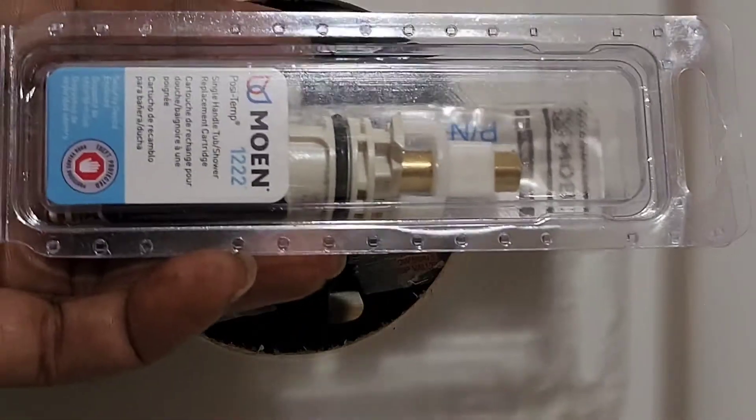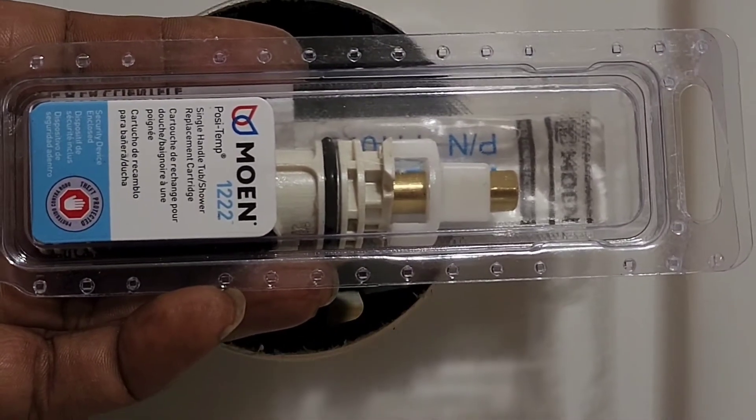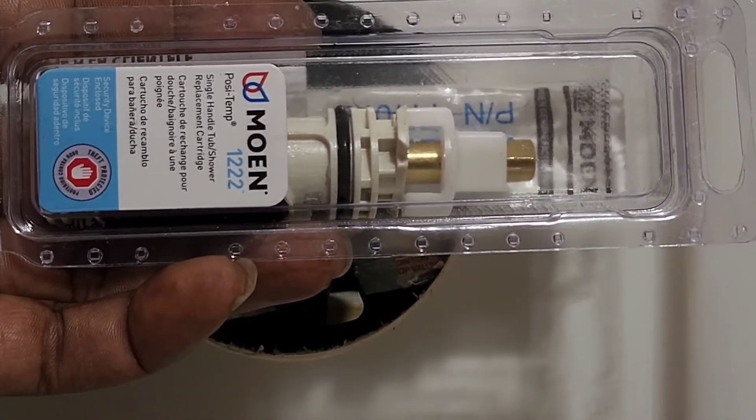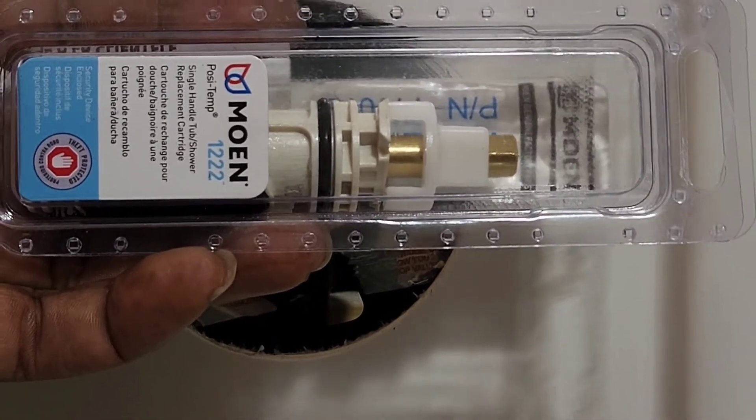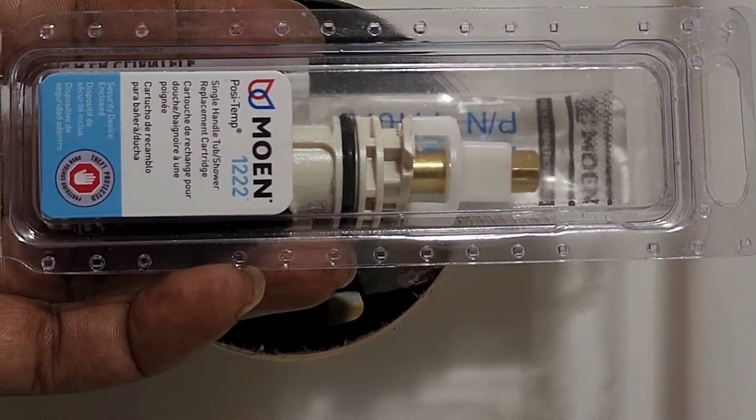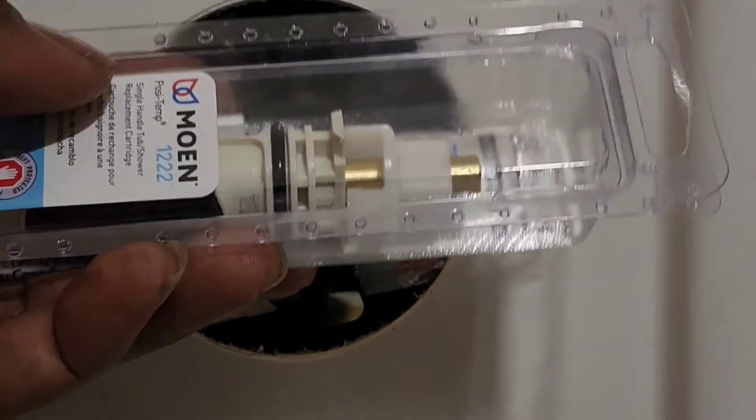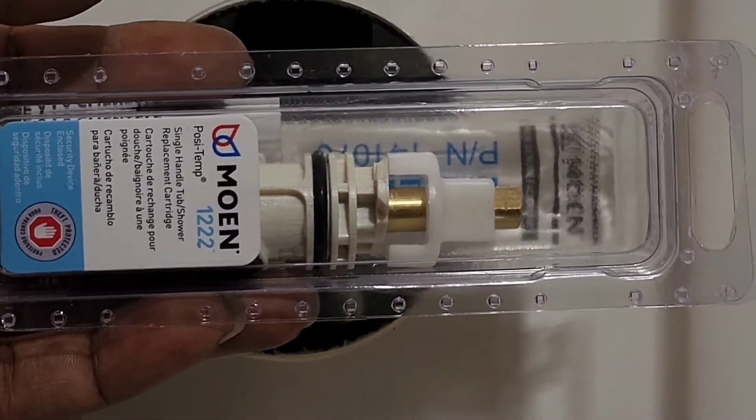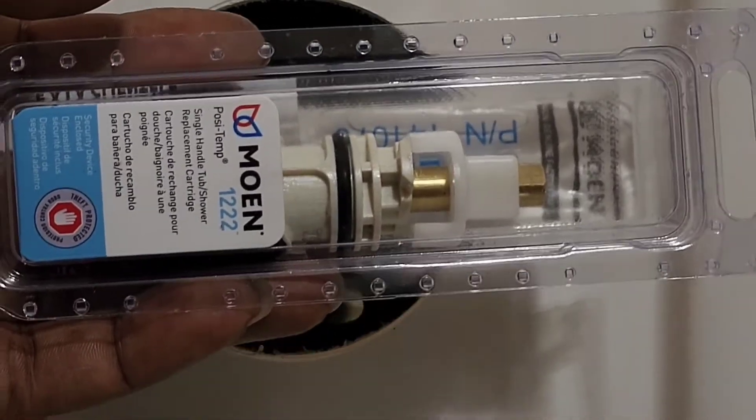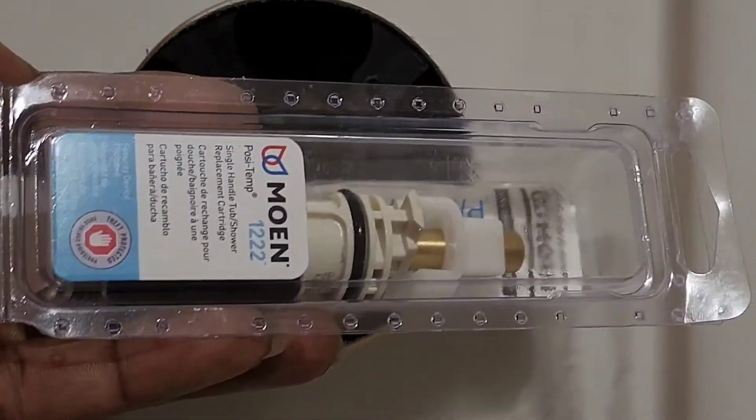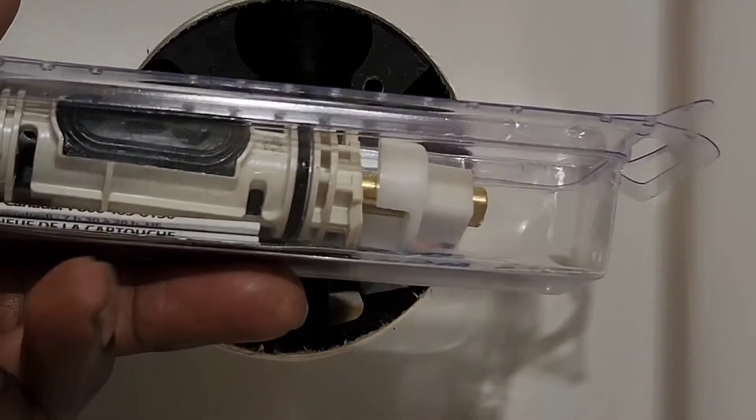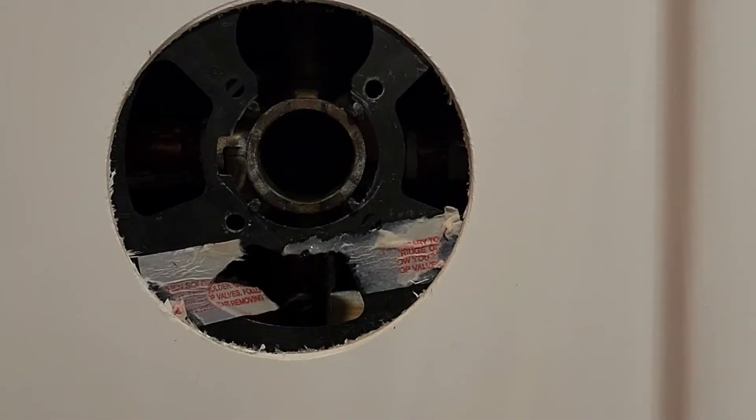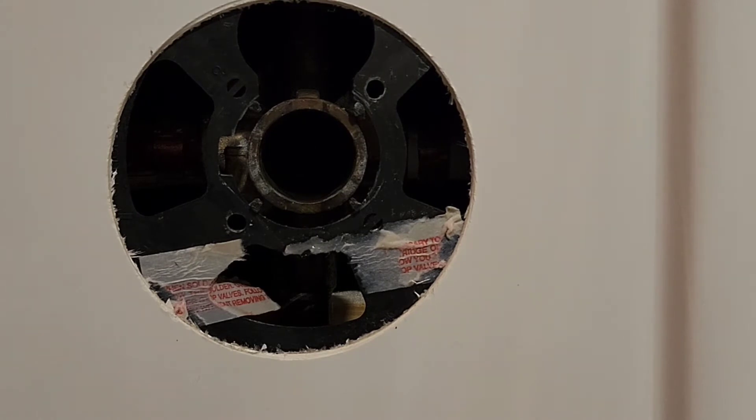So we're going to go ahead and put the new one in. This right here is what I'm going to be putting in. It's the Moen 1-222 cartridge, 12-22. That's what you need. Got this off Amazon. It's about 40, I think about 45 bucks. And this is what you need to be able to fix it.